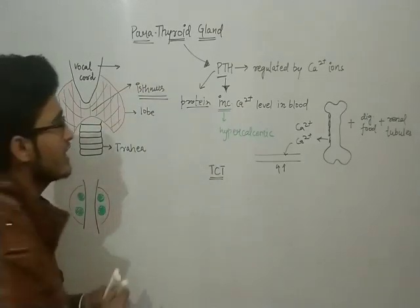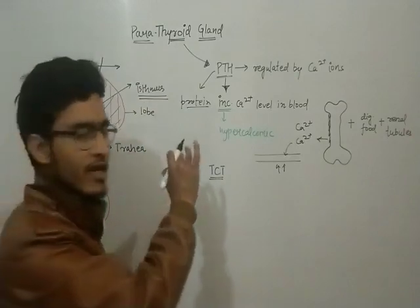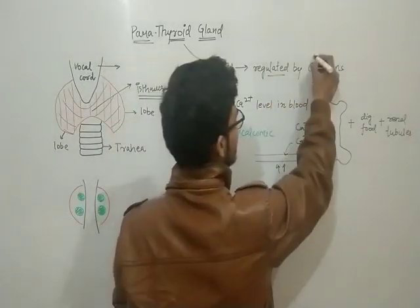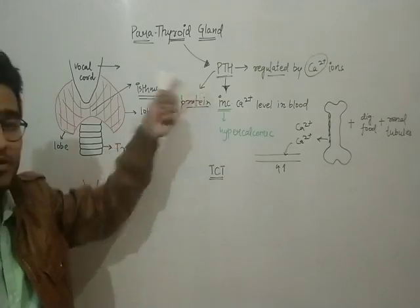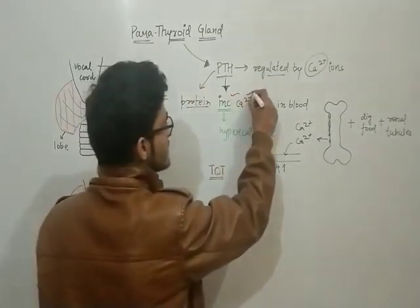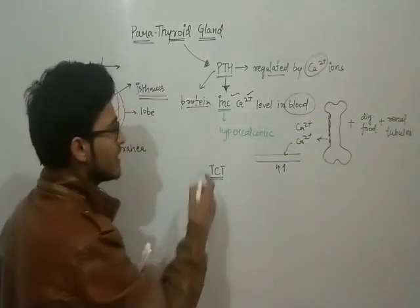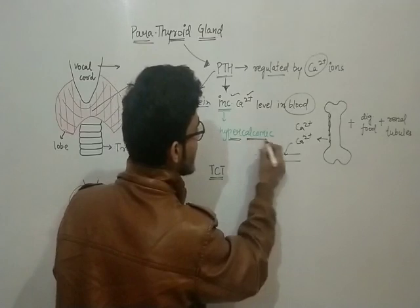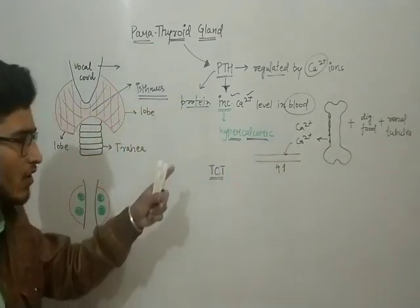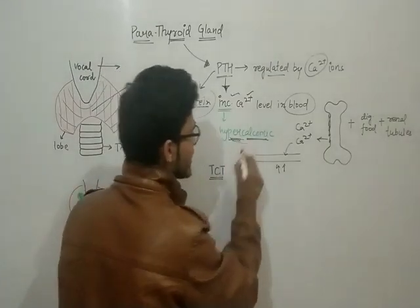We know very well there are four parathyroid glands. Parathyroid hormone is synthesized by the parathyroid gland which is regulated by the calcium ions. Now the PTH itself regulates calcium level in our body. How? It will increase the calcium level in blood. Since it is increasing the calcium level, it is known as hypercalcemic as I have already told you, and it is proteinaceous in nature.